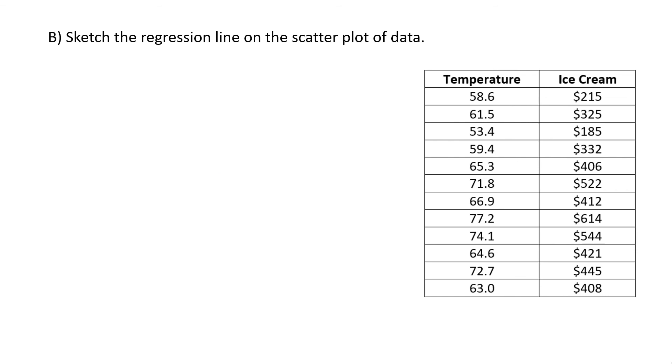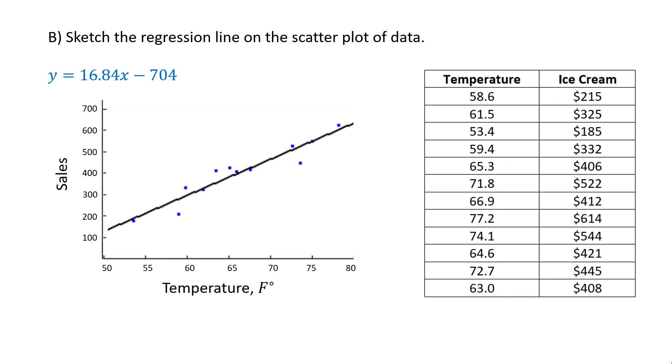Part B. We have the equation of the line y equals 16.84x minus 704. Put that in your graphing calculator for y1 and superimpose that onto the scatter plot. We see that the line very closely fits the data.